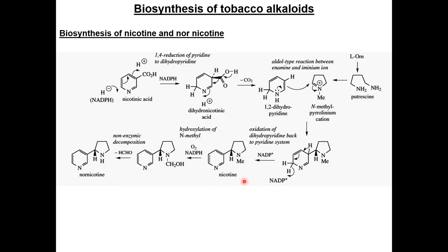Nicotine is hydroxylated into a hydroxymethyl derivative in the presence of a monooxygenase enzyme, and then formaldehyde is lost to form nornicotine. This is consistent with the experiment described in the formation of nicotinic alkaloids — the chronological order being that nicotine is produced first and undergoes demethylation into nornicotine, based on accumulation of radioactivity after feeding labeled nicotinic acid.